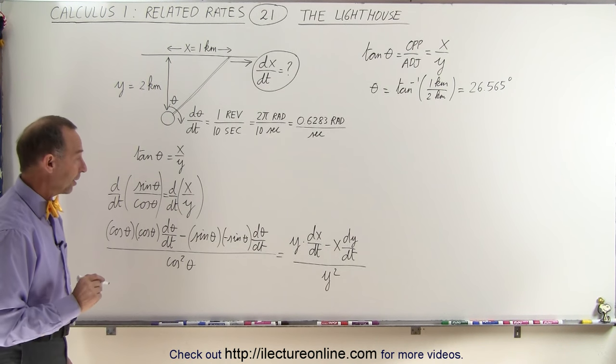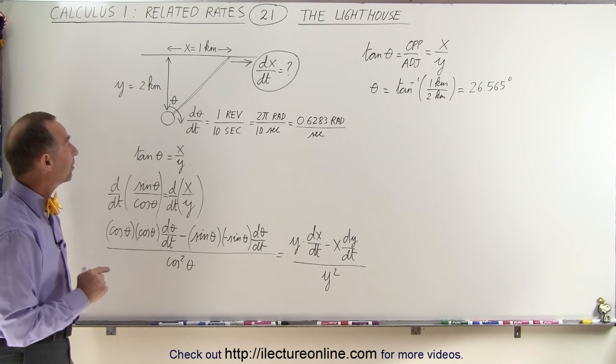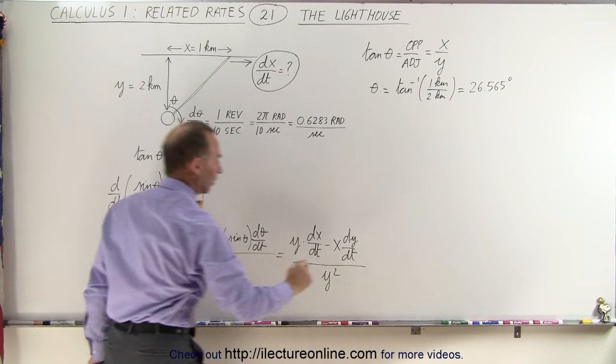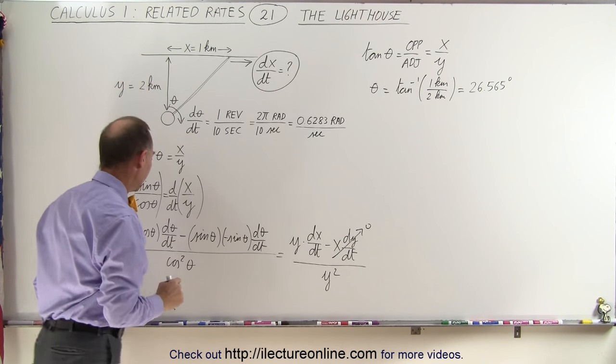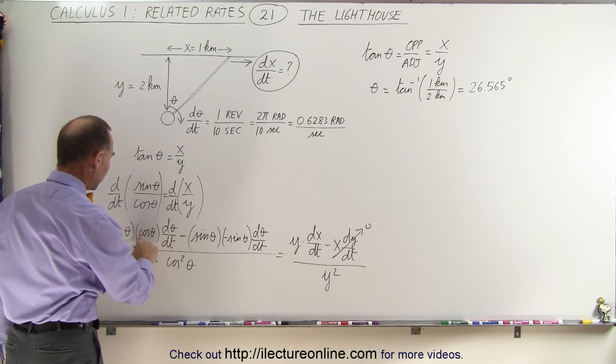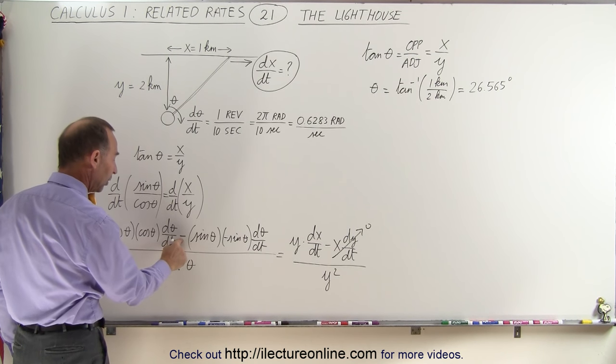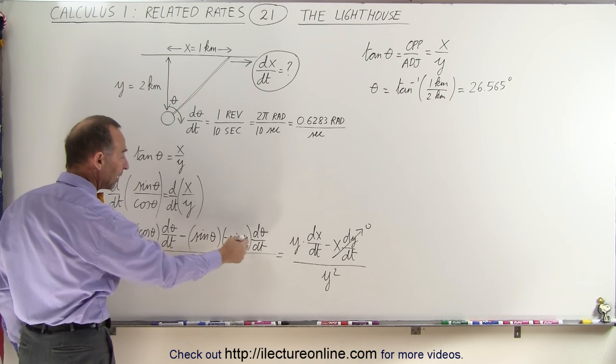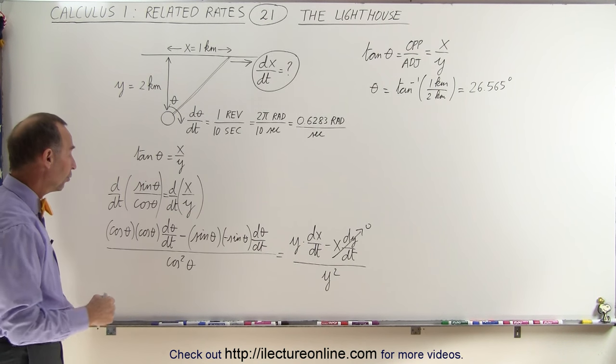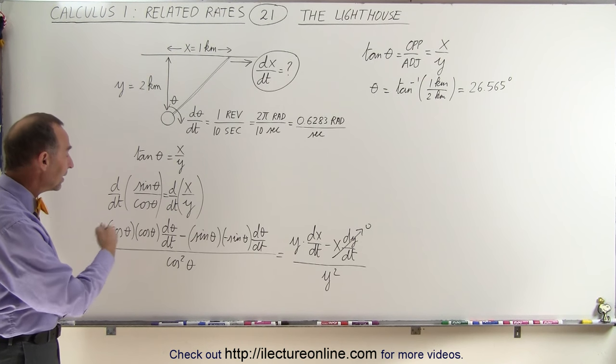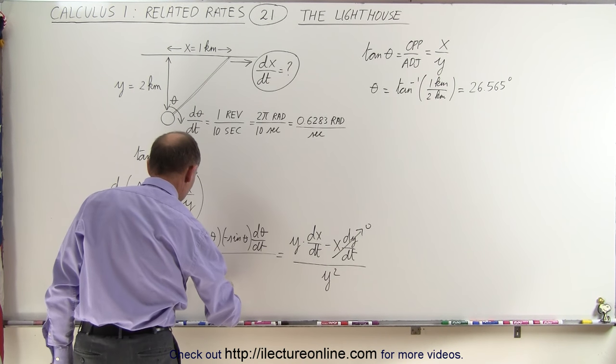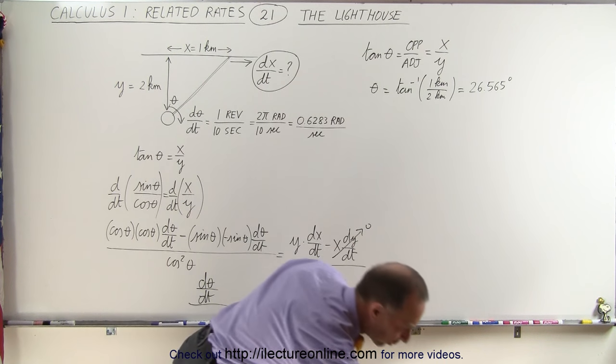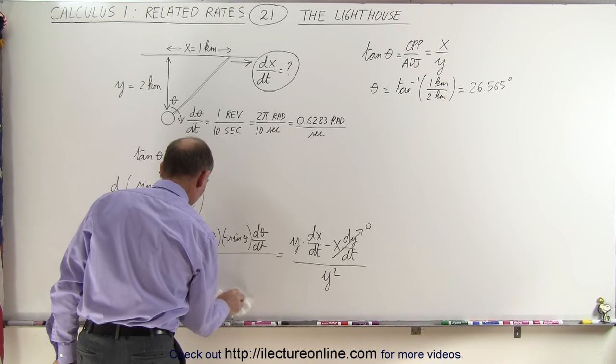Now right away we can simplify some things because we know dy/dt must be zero. Y is not changing—it's simply the distance from the lighthouse to the shoreline, so this will be zero. Here in the numerator, realizing that we have cos²(θ) plus—because it's negative times negative is a plus—plus sin²(θ), if we factor out dθ/dt, we get one times dθ/dt in the numerator. I'm running out of board space here, so let me move over to the right.